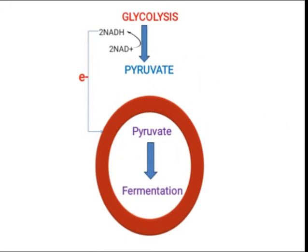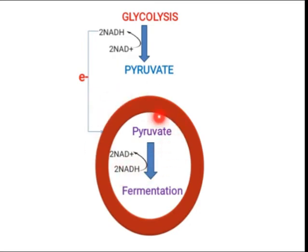In the process of glycolysis, the NADH that is made can accept electrons. In the process of fermentation, the NADH made during glycolysis is recycled back to NAD+. Since glycolysis requires NAD+, this NAD+ regenerated during fermentation allows glycolysis to continue. These two processes — fermentation and glycolysis — continue together in a cycle.